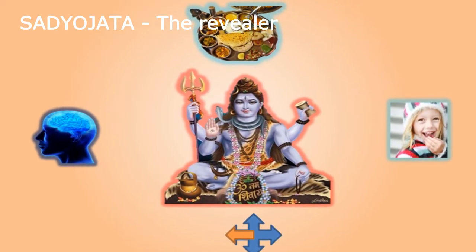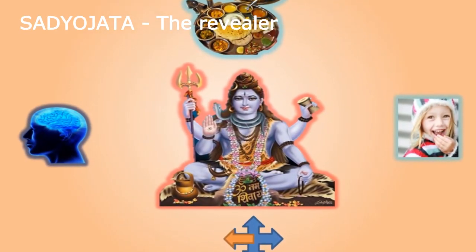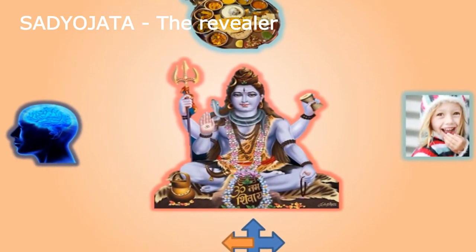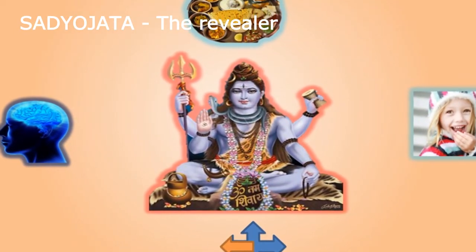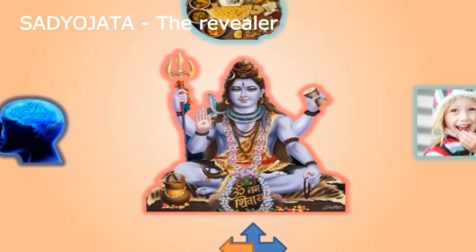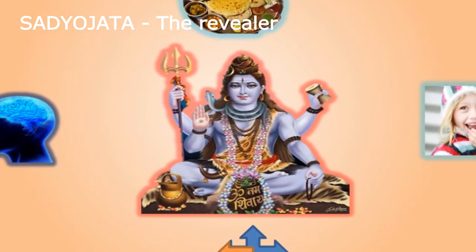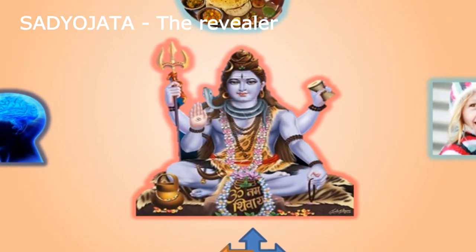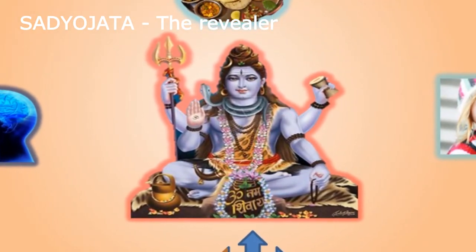It represents the fire in our body and mind. This phase is Shiva's function as a creative force and is associated with Manipura Chakra. This aspect is associated with Manonmaya Kosha, the sheath covering the soul that consists of the mind.